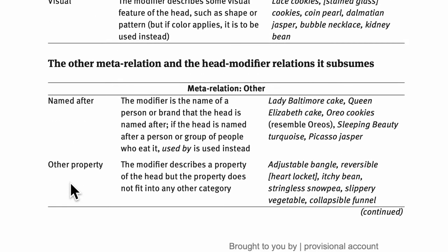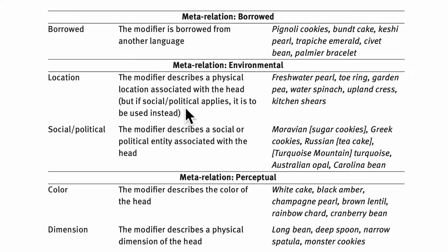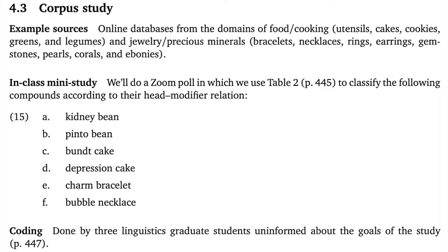We also have a few others that seem more heterogeneous and have some special instructions. For example, the named after category is designated as falling under used by, which is an event-related category. So if you were one of the annotators, you'd study this manual and then go through the dataset of compound nouns assigning labels. The Levine et al. group can then aggregate those low-level labels into the larger categories from the manual, and those connect with the two overarching hypotheses of the paper.